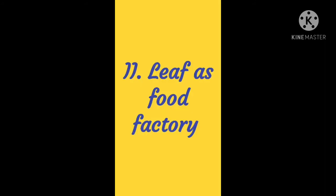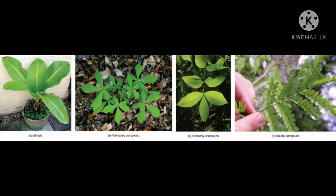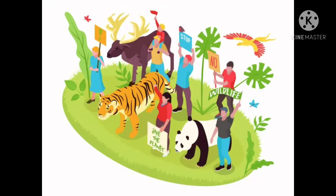Next, our topic is leaf as food factory. Plants need food but they never depend on people or animals to provide them. Most plants are able to make their own food through a process called photosynthesis.